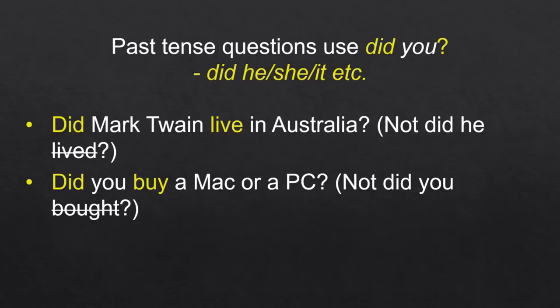Past tense questions use 'did you,' 'did he,' 'did she,' 'did it,' etc. For example: 'Did Mark Twain live in Australia?' — not 'did he lived.' 'Did you buy a Mac or a PC?' — not 'did you bought.'